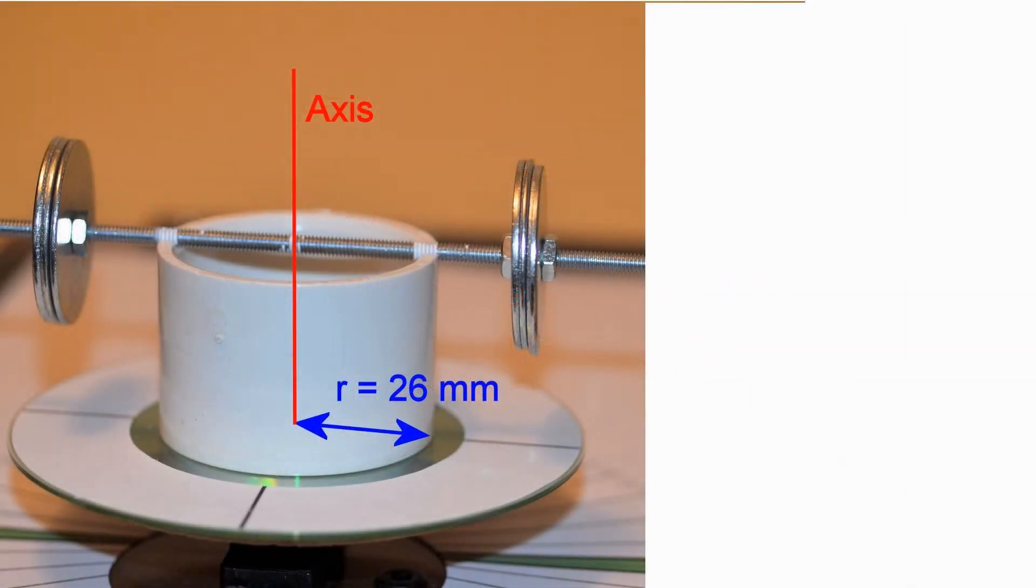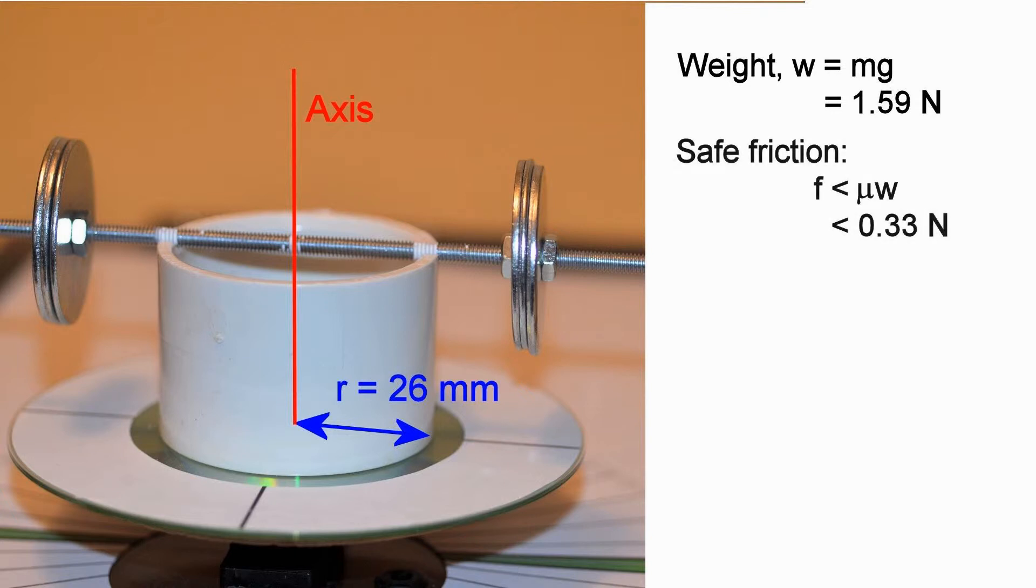Our surface will be horizontal, so the normal force will be equal in magnitude to the weight of the object. The total mass is 0.1625 kilograms, which gives a weight of 1.59 newtons. If friction can really provide a force up to 21 percent of the normal force, we should be able to get up to about 0.33 newtons of frictional force. In operation, all this force is delivered at a distance of 26 millimeters from the axis, so we should be able to count on a torque of up to 0.0087 newton meters.